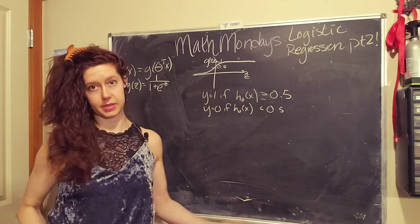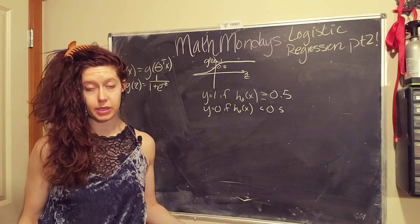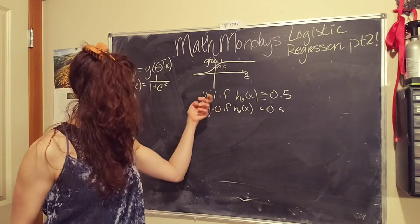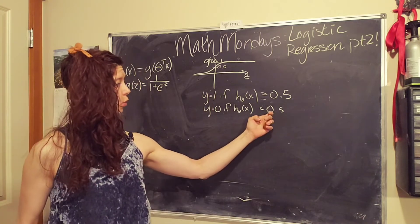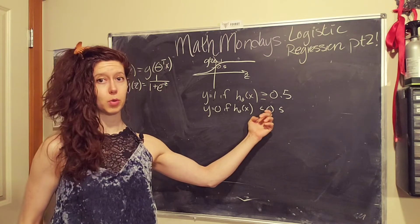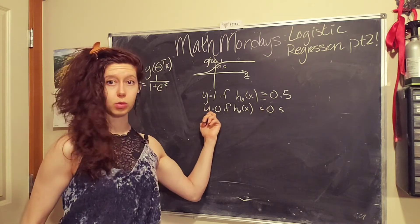And so this kind of makes sense. If we are predicting a probability that's greater than 50%, we're going to say our prediction is that y equals one. And if we have a prediction that is less than 50%, we're going to say that y equals zero.